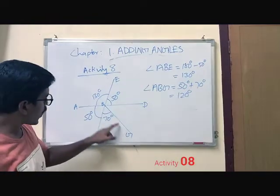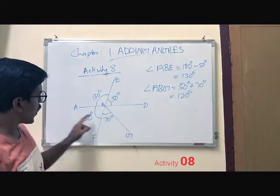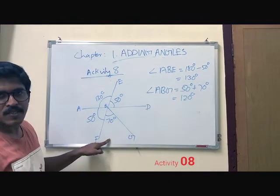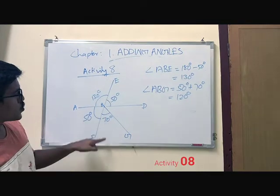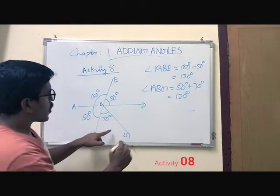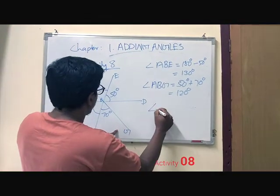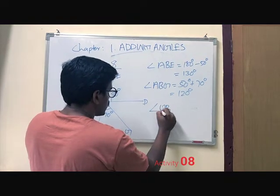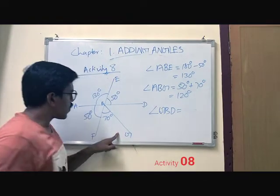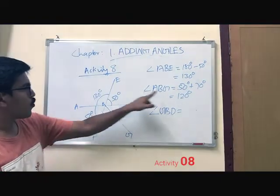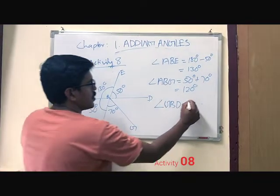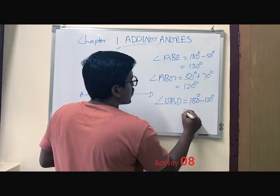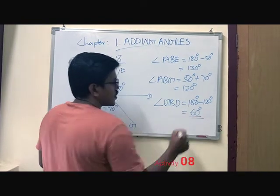Now angle A, B, G and angle G, B, D are linear pairs and nearby angles. So we can find out the measurement of angle G, B, D by subtracting 120 from 180. That is 180 degrees minus 120 degrees, which is equal to 60 degrees.